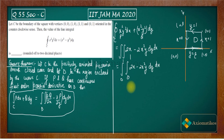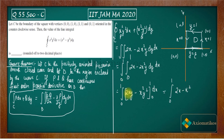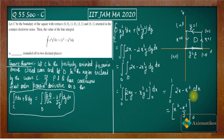Integrating with respect to y first: integrating 2x gives 2xy, and integrating −2x²y gives −x²y². Evaluating from y = 0 to y = 1 yields 2x − x². Integrating this from 0 to 1 with respect to x gives x² − x³/3, and placing the limits gives 1 − 1/3 = 2/3.